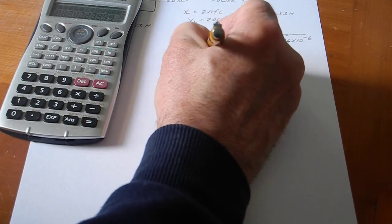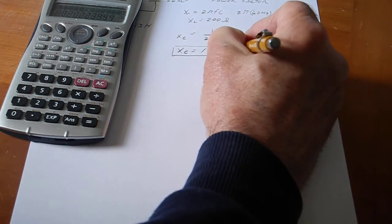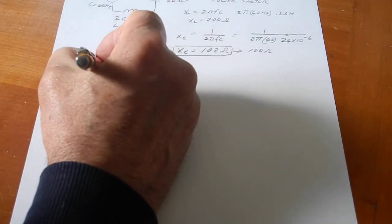So, X of C equals 102 ohms. So, basically, I designed this to be 100 ohms. I picked it and I just rounded off the capacitance value.